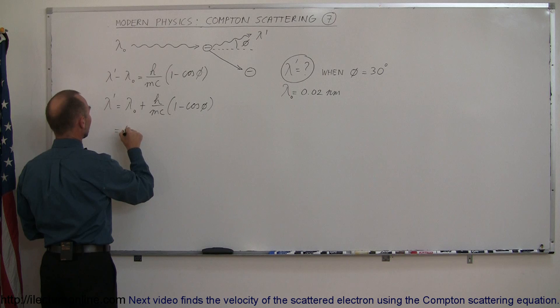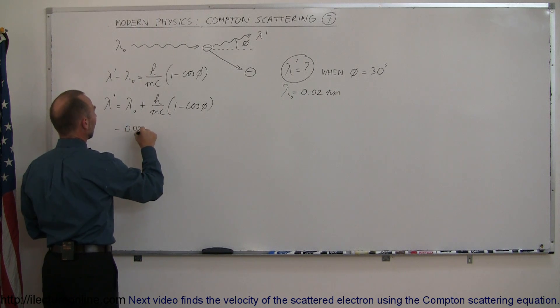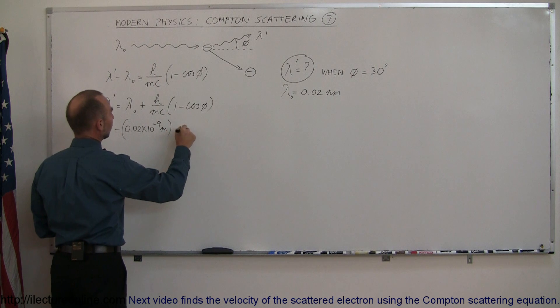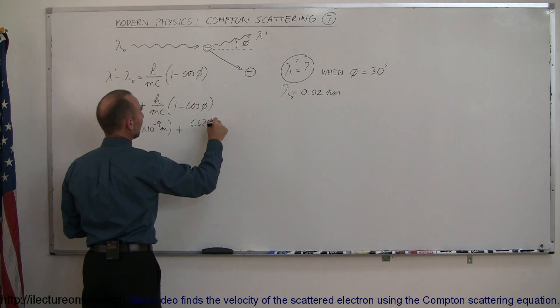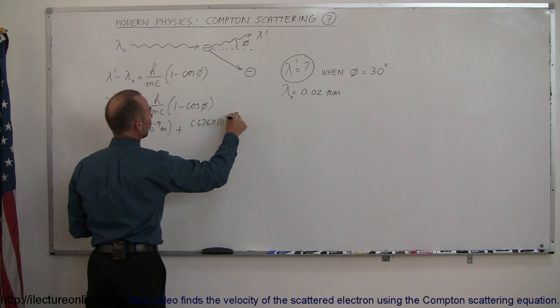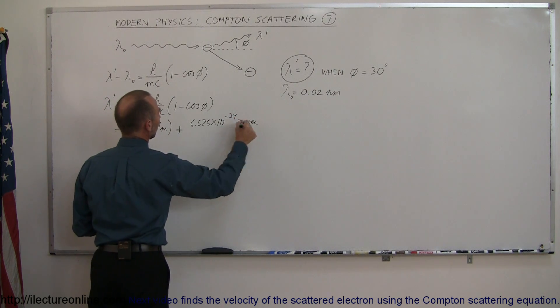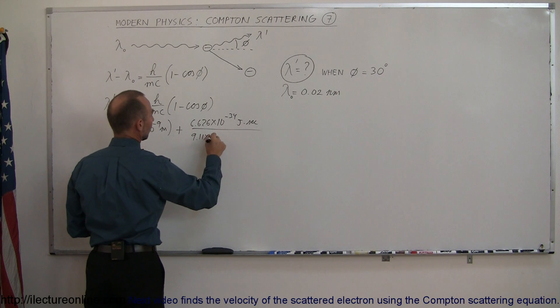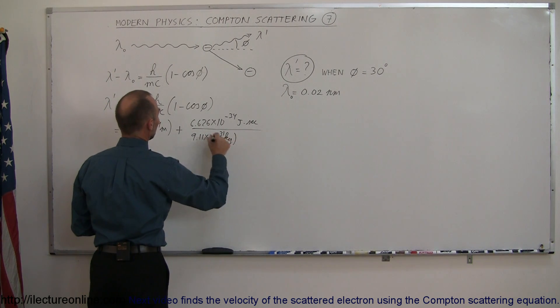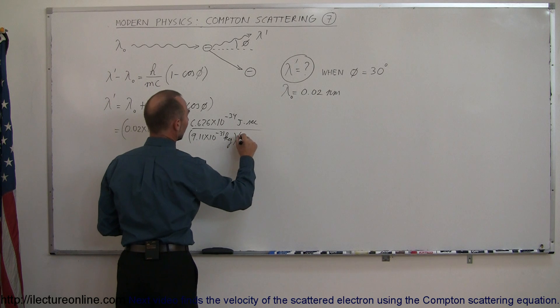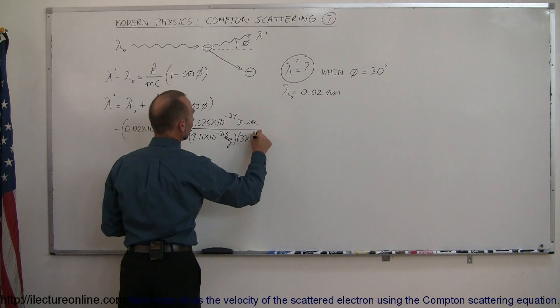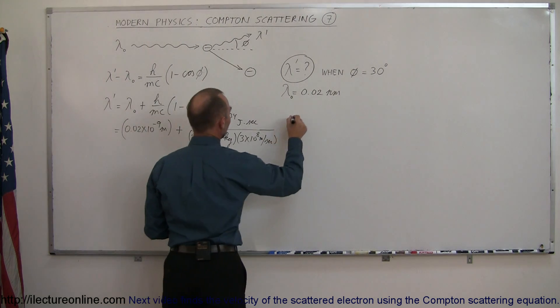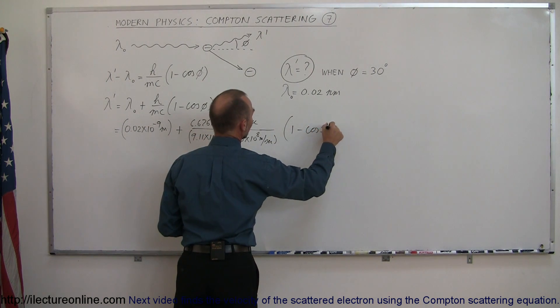This equals the original wavelength of 0.02 times 10 to the minus 9 meters, plus Planck's constant 6.626 times 10 to the minus 34 joule-seconds, divided by the mass of the electron 9.11 times 10 to the minus 31 kilograms, times the speed of light 3 times 10 to the 8 meters per second, times 1 minus the cosine of 30 degrees.